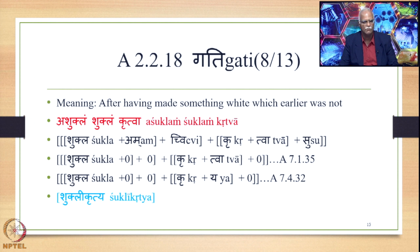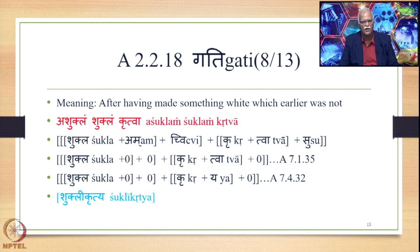In the sense of Abhuta Tadbhave, the suffix Chvi is added to Shukla. We have Shukla plus Chvi plus Kru plus Tva plus Su. The entire Chvi suffix gets deleted. Shukla is related with the action of doing as karma — there is semantic relatedness. Once we have this Alavukika Vigraha, Samasa Saudhnya takes place, then Pratipadika Saudhnya, and the Su Pratyayas get deleted. So we have Shukla plus zero plus Kru plus Tva plus zero.